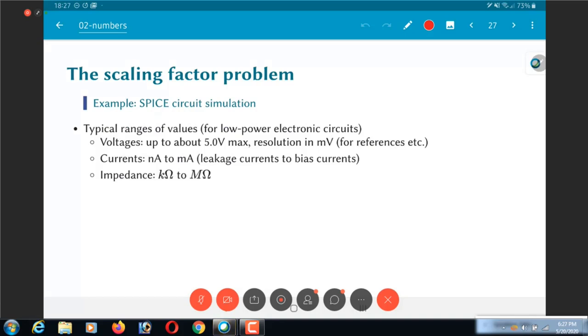Now if you look at the dynamic ranges over there, what did I say? 5 volts with the resolution in the millivolts range. So this is approximately a dynamic range of few thousands. Nanoamps to milliamps is a bit more, this might be up to 10 power 6 or so. Versus impedances, this is again roughly 10 power 3. What I mean by that is I am interested in values from the kilo-ohms to the mega-ohms range. The dynamic range that I am looking at is roughly 10 power 3 or so.